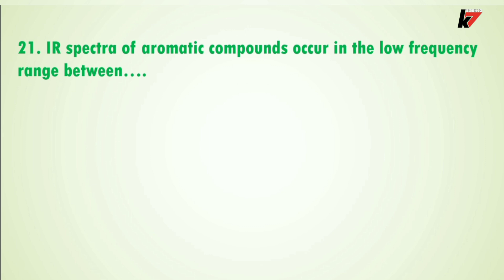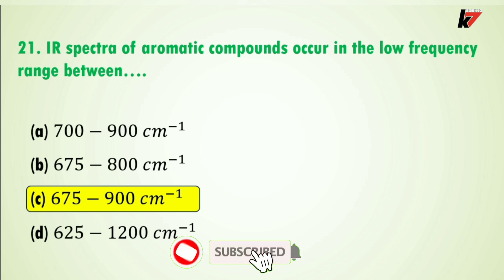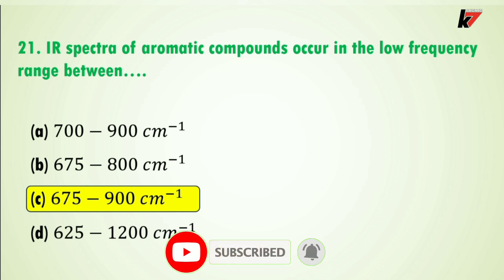Question 21: IR spectrum of aromatic compounds occurs in the low frequency range between — here are four options and the correct answer is option C: IR spectrum of aromatic compounds occurs in the low frequency range between 675 to 900 cm⁻¹. This is the aromatic region of the IR spectrum.